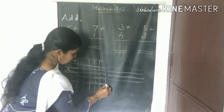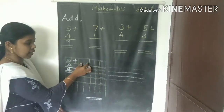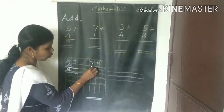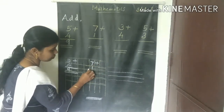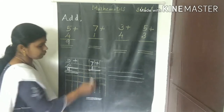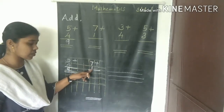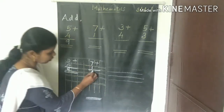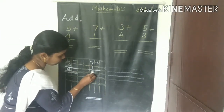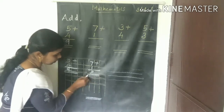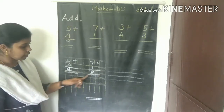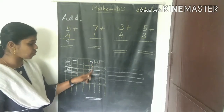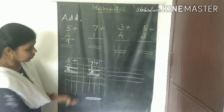Next question: seven plus one. What is seven plus one? Any number plus one equals the number that comes just after it. So seven plus one is equal to eight. Write the answer in the box and underline with two lines.